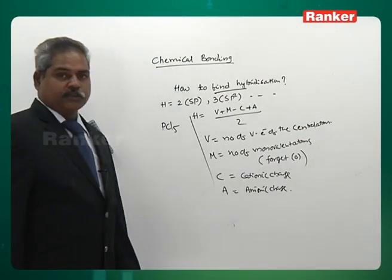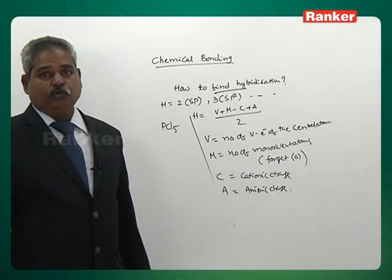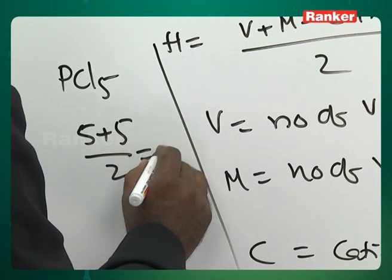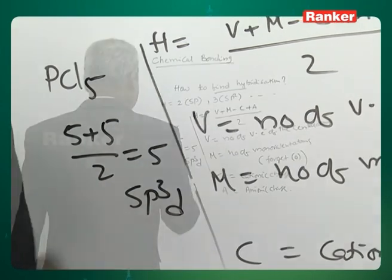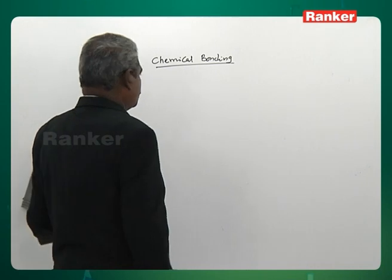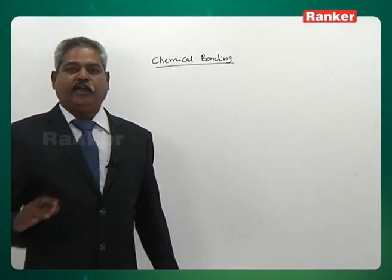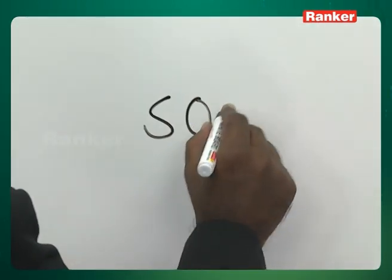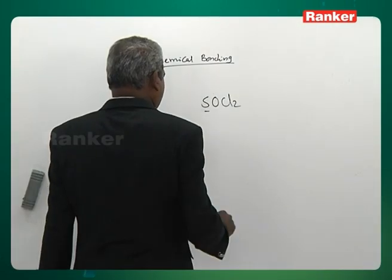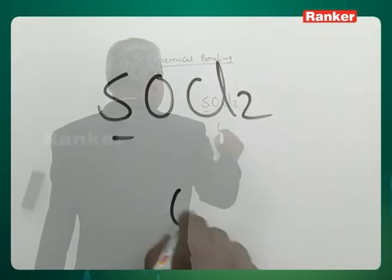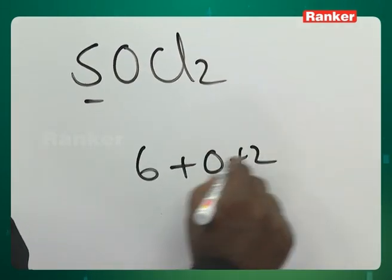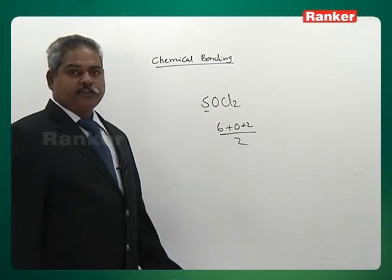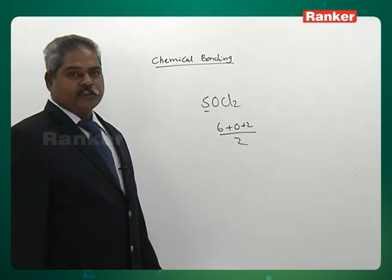PCl5: phosphorus belongs to the fifth group, V = 5, M = 5 (five chlorines). H = (5 + 5) / 2 = 5. Hybridization is sp3d. SOCl2: central atom is sulfur, V = 6, oxygen ignored, M = 2 (two chlorines). H = (6 + 2) / 2 = 4. Hybridization is sp3.